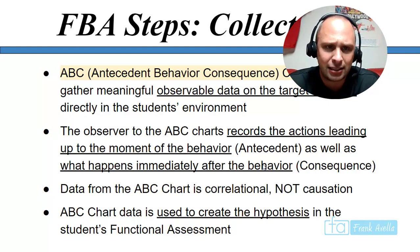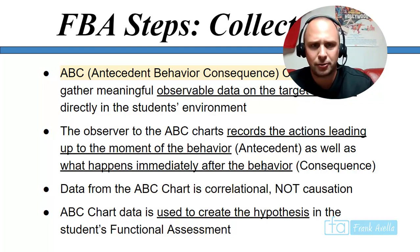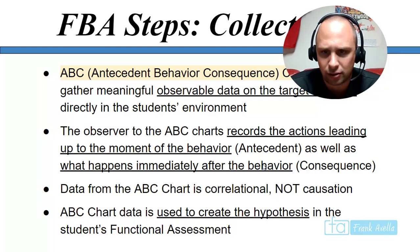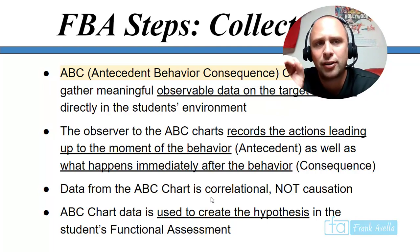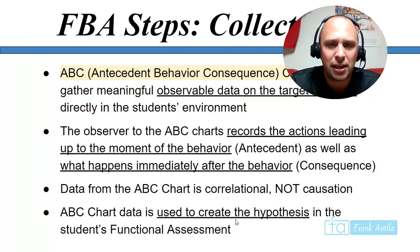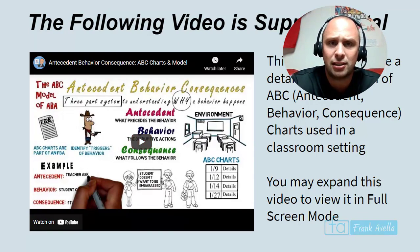The observer using the ABC chart records the actions leading up to the behavior — the antecedent — and what happens immediately after — the consequence. For example, what is happening right before the student curses out the teacher? ABC chart data is correlational, not causational, and it is used to create a hypothesis. The purpose of the FBA is to determine the 'why,' and that 'why' is our hypothesis based on data — we call it a hypothesis because we're never one hundred percent sure.